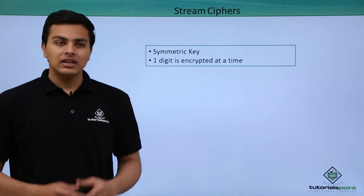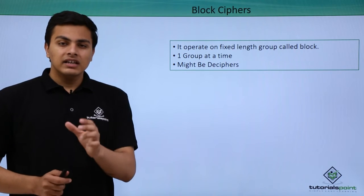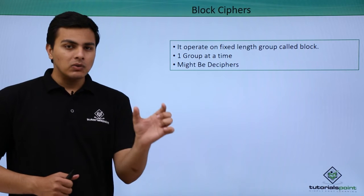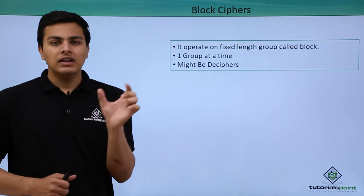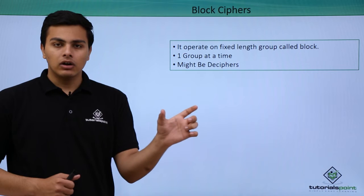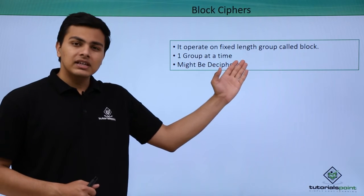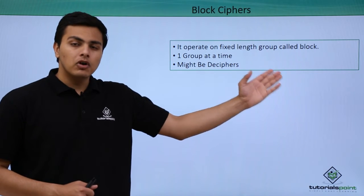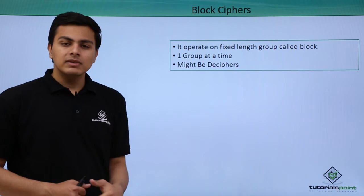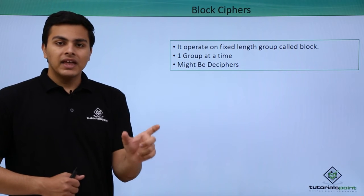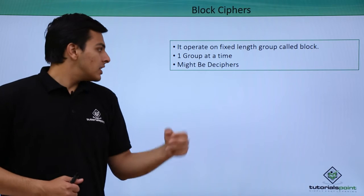Now let's talk about block cipher. As the name suggests, the block cipher encrypts a particular block or a fixed-length group of bits called a block. It operates on a fixed length group — for example 64 bits — meaning one group of 64 bits will be encrypted at a time.